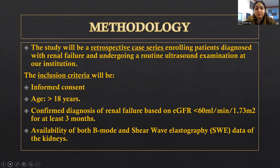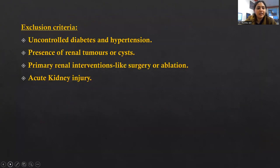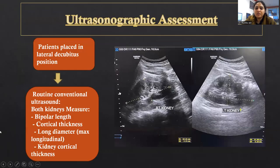Methodology. This study is a retrospective case series, enrolling patients diagnosed with renal failure and undergoing a routine ultrasound examination at our institution. The inclusion criteria include informed consent, age more than 18 years, confirmed diagnosis of renal failure based on eGFR less than 60 ml/min/1.73 m² for at least 3 months, and availability of both B-mode and shear wave elastography data of the kidneys. Exclusion criteria include uncontrolled diabetes and hypertension, presence of renal tumors or cysts, primary renal interventions like surgery or ablation, and acute kidney injury.